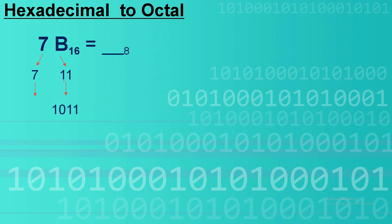First, we have 1011 in binary. So 8 plus 2 plus 1 is equal to 11. Next, number 7 is equivalent to 111 in binary. So 4 plus 2 plus 1 is equal to 7.